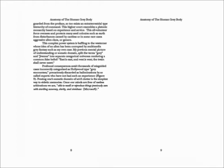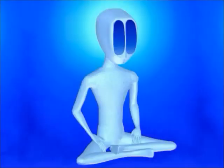Most current technology, whether traveled by craft, instrument, or wave, is neither beneath nor beyond their capabilities. Just as the most advanced technology of earth is guarded from the uninitiated, so too exists an extraterrestrial hierarchy of command. This higher court resembles a platonic monarchy based on experience and service. This all-volunteer force oversees and protects many seed colonies, such as earth, from disturbances caused by careless or, in some rare cases, aggressive alien clans. This complex power system is baffling to the westerner whose ideal of an alien has been corrupted by multimedia gray fantasy. In my own case, my previous mental picture put the terms 'gray' and 'jivakma' into separate categorical universes, rendering the false belief that east is east, west is west, and the twain should never meet.